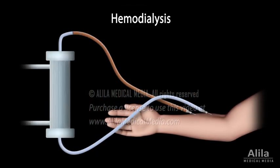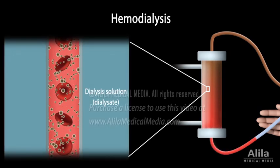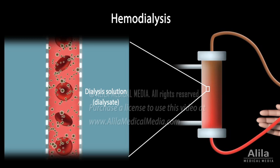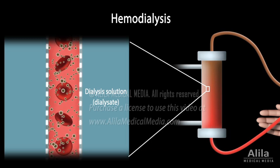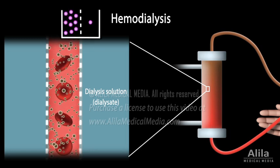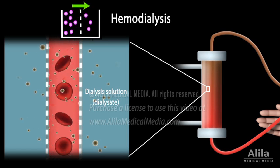Once inside the machine, blood flows within tiny tubes surrounded by a dialysis solution called dialysate. The walls of the tubes act as semi-permeable membranes that allow only small molecules, such as water, nitrogenous wastes, and electrolytes, to pass through. The filtration occurs by osmosis and diffusion, where water and solutes move from higher to lower concentration.